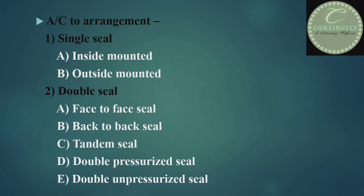According to arrangement, the seal is classified into two parts: first, single seal; and second, double seal. Single seal is further classified into inside mounted seal and outside mounted seal. Double seal is further classified into five parts: face-to-face seal, back-to-back seal, tandem seal, double pressurized seal, and double unpressurized seal. This is the whole classification of the mechanical seal.